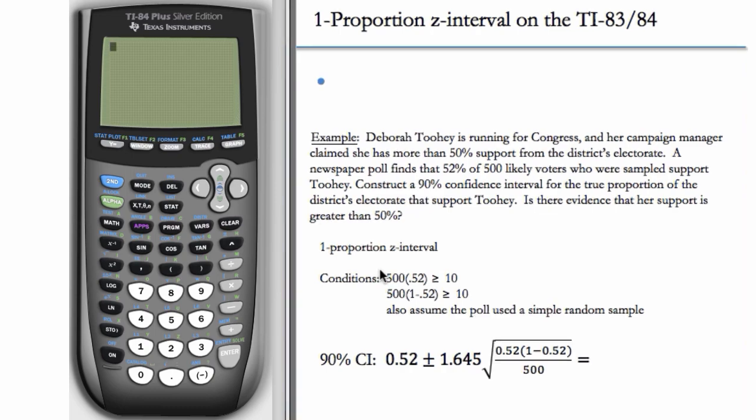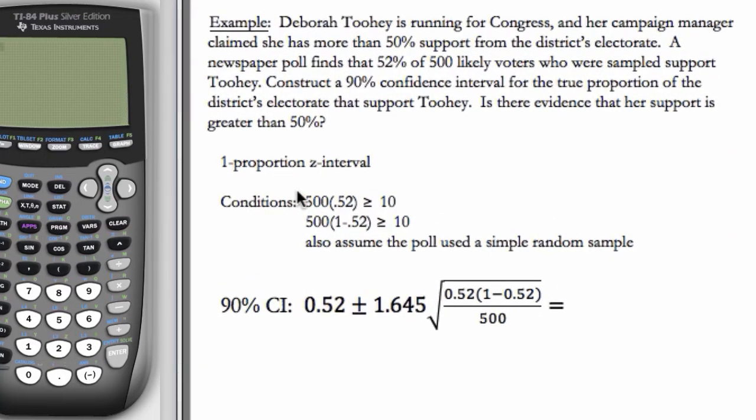Here we start with an example from Advanced High School Statistics by OpenIntro. Deborah Toohey is running for Congress, and 52% of the 500 likely voters who were sampled support her. So our p-hat, our sample proportion, is 0.52.